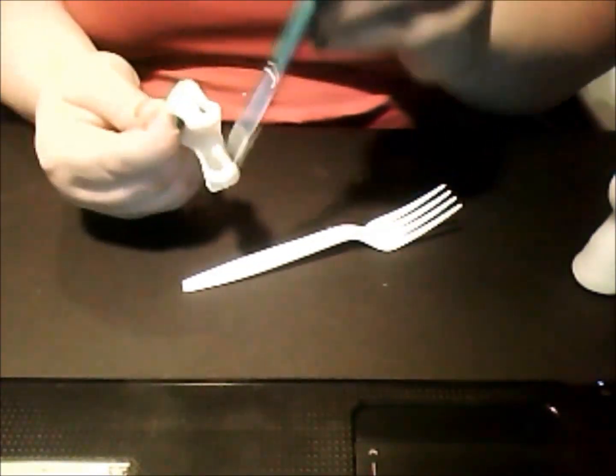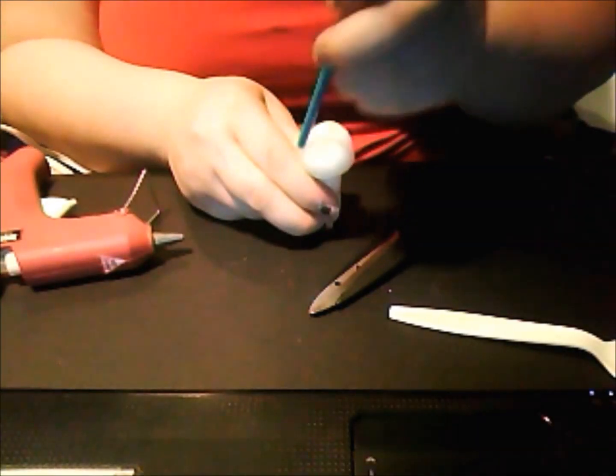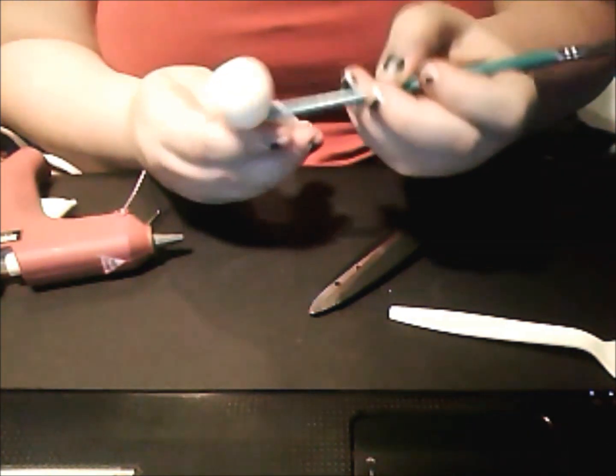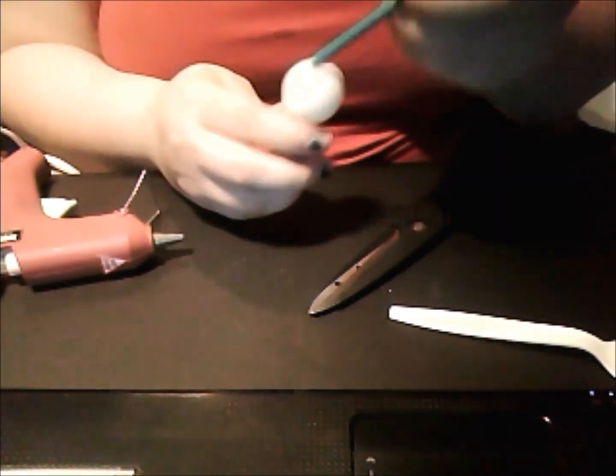Okie dokie. Only paint the outside and the inside of the hands. You want to leave the very top unpainted so you can hot glue the hair to the doll.